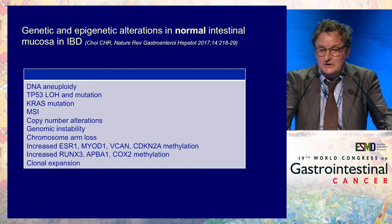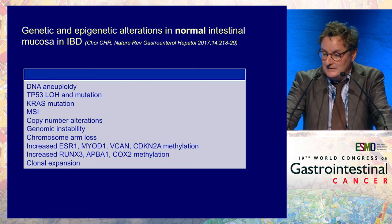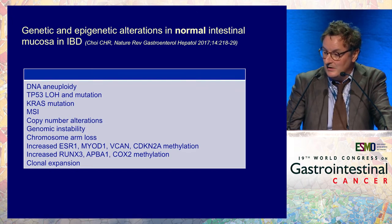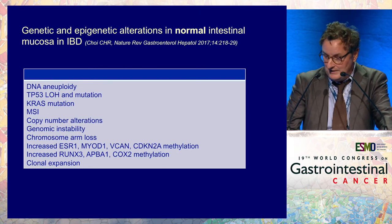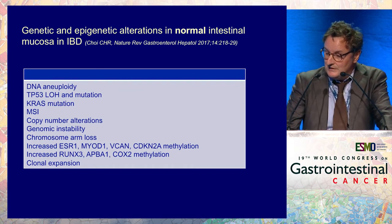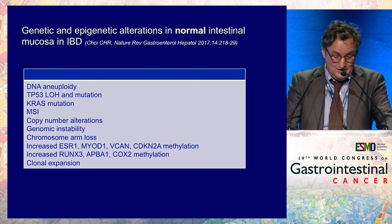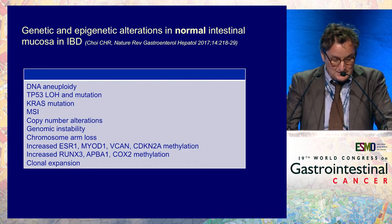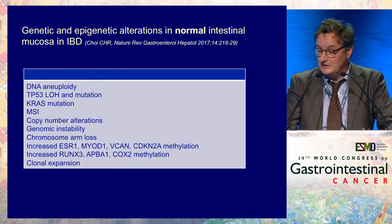Something unique to IBD-related colorectal cancer is the concept of field cancerization. You can find genetic and epigenetic alterations in normal — meaning non-neoplastic but generally inflamed — intestinal mucosa in IBD, sometimes very far from the area of dysplasia. This defines the phenomenon of field cancerization, meaning that large areas of histologically normal epithelium are preconditioned to the future development of neoplasia.